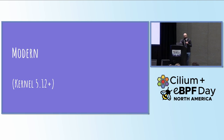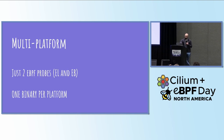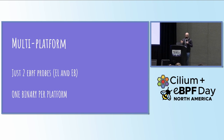By modern, we set a bar and said kernel 5.12 is going to be the lowest we'll support — which is a long-term-ish supported kernel. For multi-platform, we wanted just two variants of our eBPF probe: one that's little-endian and one that's big-endian. Those are the only two variants we should ever need. We still need one binary per platform, but from the eBPF side things are much simpler than having one probe for every target architecture and potentially different kernel versions.